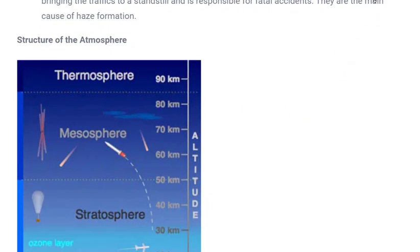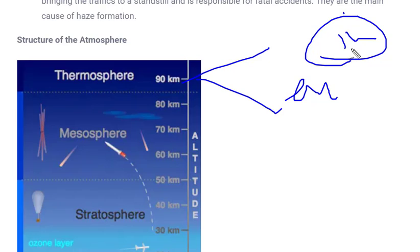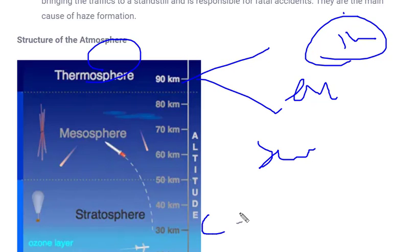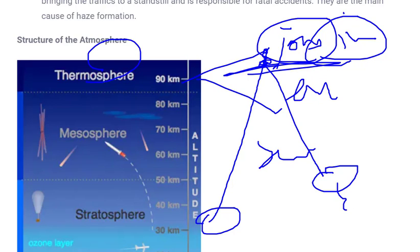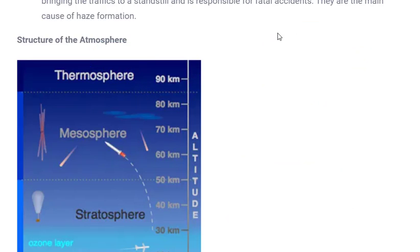The next layer is the thermosphere, which is divided into two parts: the ionosphere and the exosphere. It is called the ionosphere because all kinds of ions are present in this layer, and radio wave reflection and ionic radiation take place here. For example, when you watch TV, a satellite station sends signals that go into the ionosphere and reflect back — that is how we receive the signal. Governments auction all kinds of spectrum present in this layer.